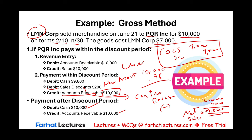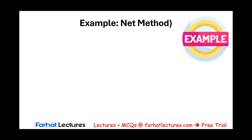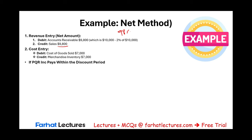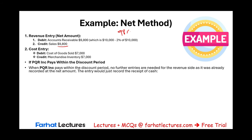Under the net method, we assume the customer will take the discount upfront. We debit accounts receivable $9,800 and credit sales $9,800 (98% of $10,000). The cost entry — debit cost of goods sold, credit inventory — remains the same. If PQR pays within the discount period, they pay $9,800: debit cash $9,800, credit accounts receivable $9,800, and the account is cleared.